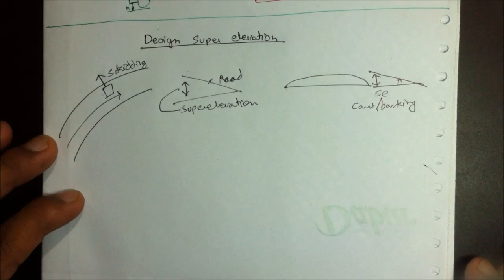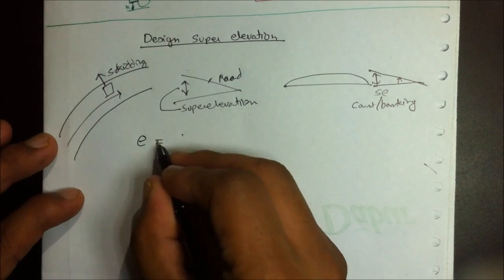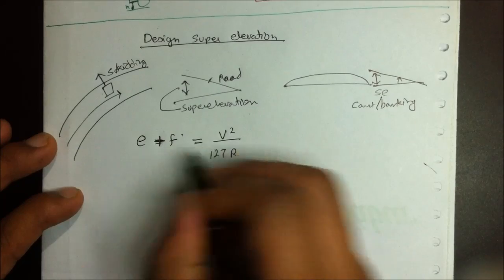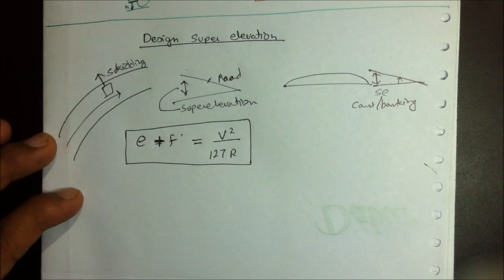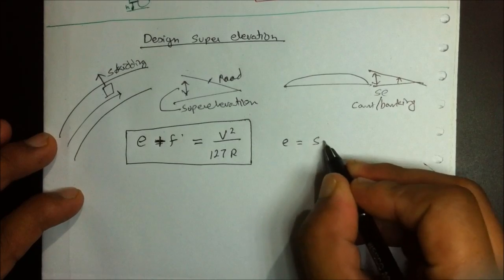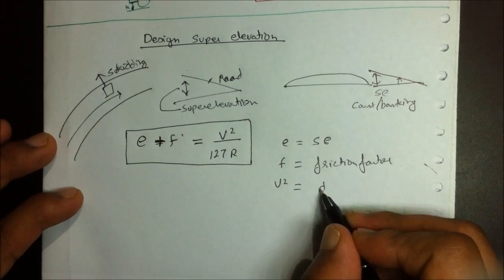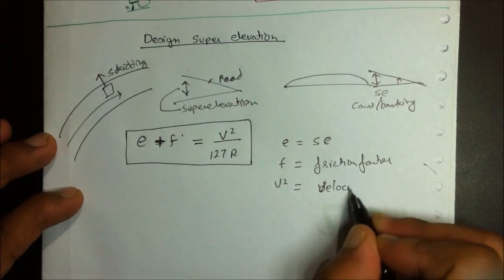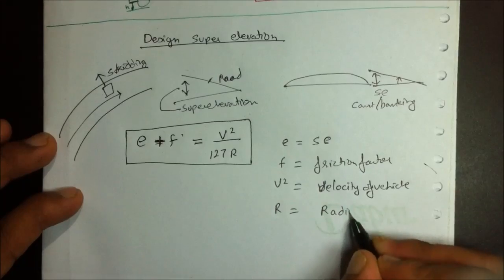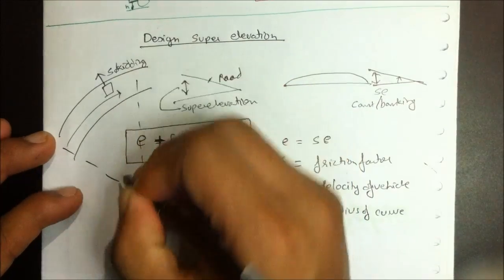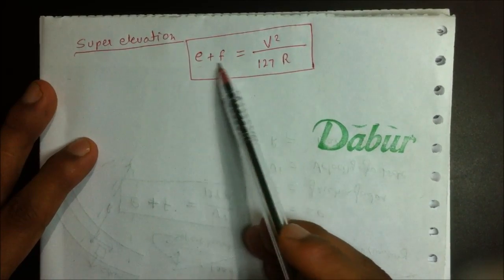The concept is clear for super elevation — it is the increased height of the road from one end. This design super elevation is denoted by E. The formula is: E plus F equals V squared upon 127R, where E is the super elevation, F is the friction factor, V is the velocity of the vehicle, and R is the radius of the curve.